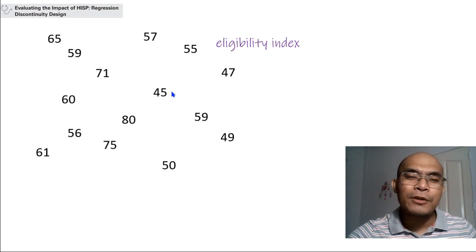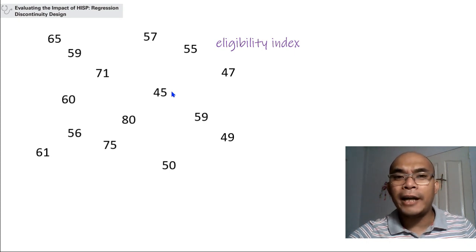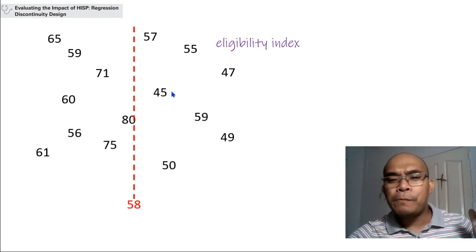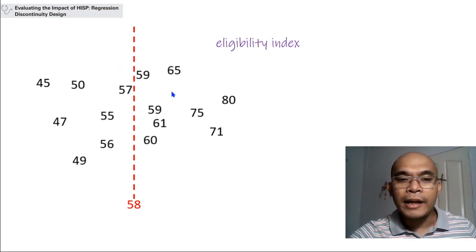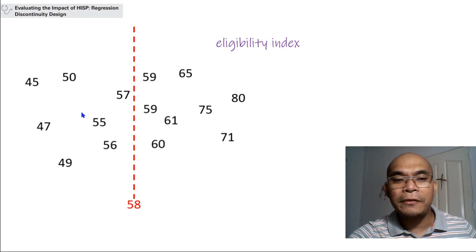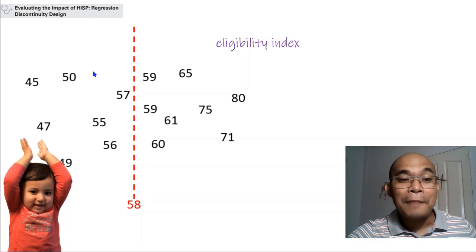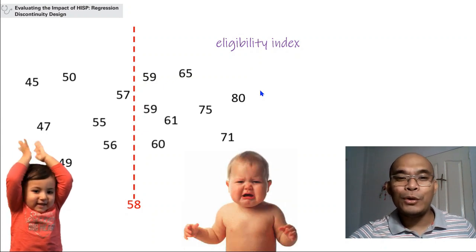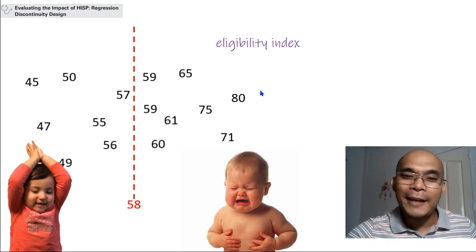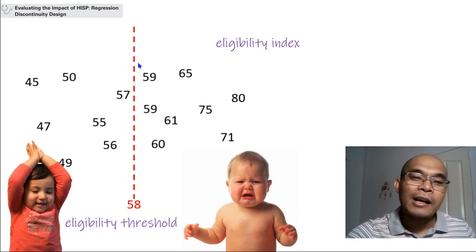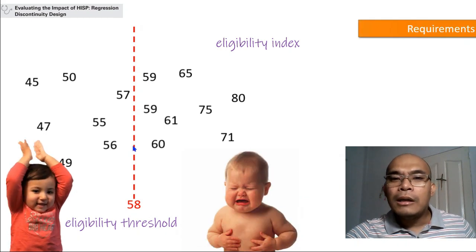In this particular case, based on previous studies, they decided to identify who is poor and in need of the subsidy by setting a cutoff score of 58. Those with a score of 58 or below are considered eligible — the happy ones — while those above 58 are ineligible. This value of 58 is what we call the eligibility threshold, which determines eligibility for the program.